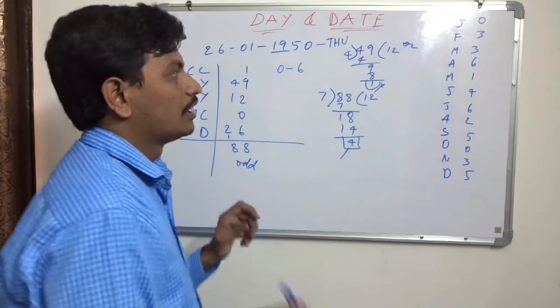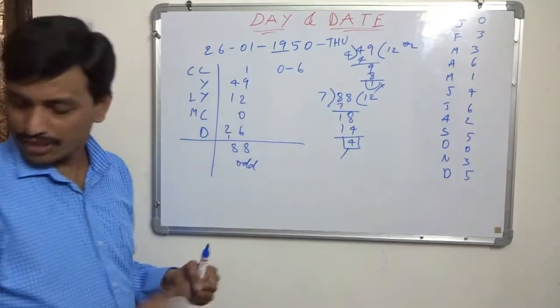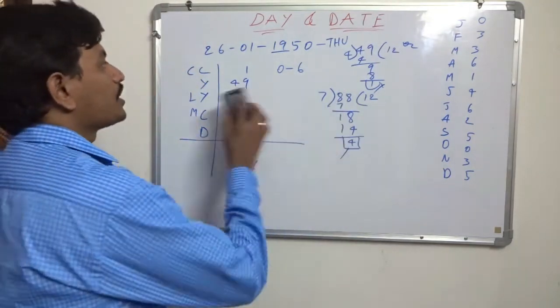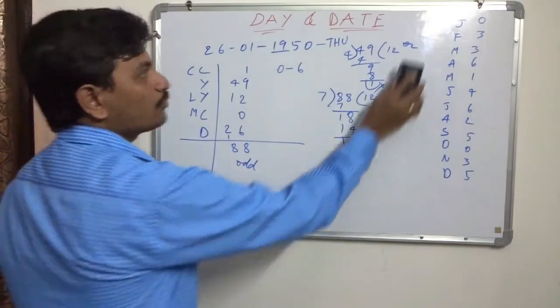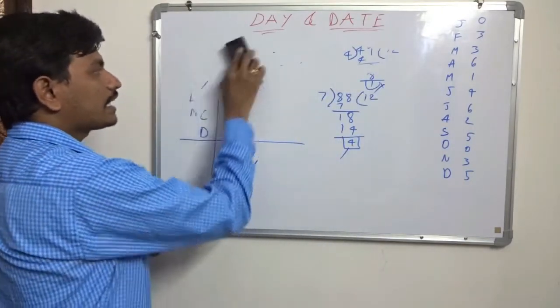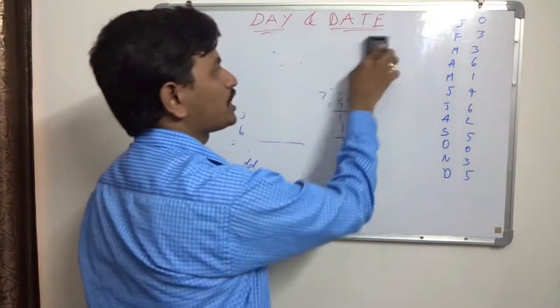Remainder 4 — counting from Monday: Monday, Tuesday, Wednesday, Thursday. So our Republic Day falls on Thursday. Like this we calculate every date.